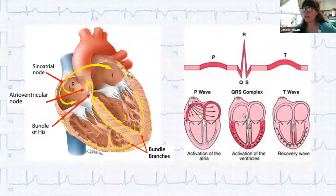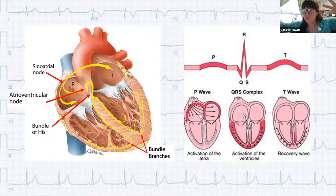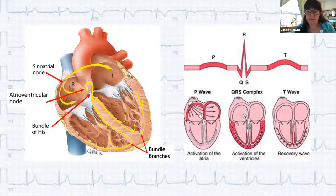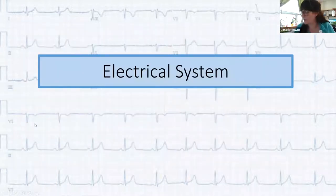The impulse continues down through the bundle of His in the upper interventricular septum, then moves down the bundle branches — right and left — spreading to the ventricles, causing contraction. That movement of electricity is what you see as the PQRST waves: the P wave, then the QRS moving through, and the T wave representing recovery or relaxation.